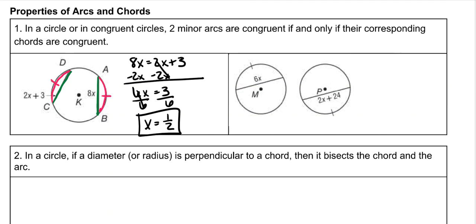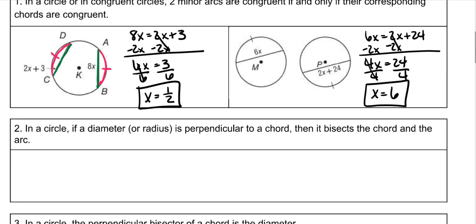and that means that x is a half. In both of these circles, it shows you that the arcs are congruent, so it means their chords are also congruent. So 6x is equal to 2x plus 24. Subtract 2x on both sides. So 4x is equal to 24, divide by 4, and x is 6. So that's our first property.